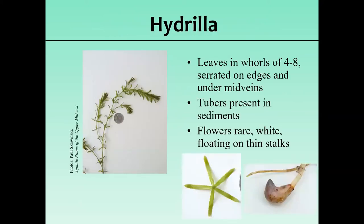Similar to Brazilian waterweed is Hydrilla, which has been causing problems in the southern United States for decades and was recently discovered in northern Illinois, Indiana, and lower Michigan — not far from Wisconsin. It also has whorls of at least four leaves with serrated edges. In the sediments just an inch or two below the plant, you'll find tubers — essentially tiny potatoes that store starch and generate new plants. No native species that looks similar produces any tubers, so finding a tuber is definitive identification for hydrilla.